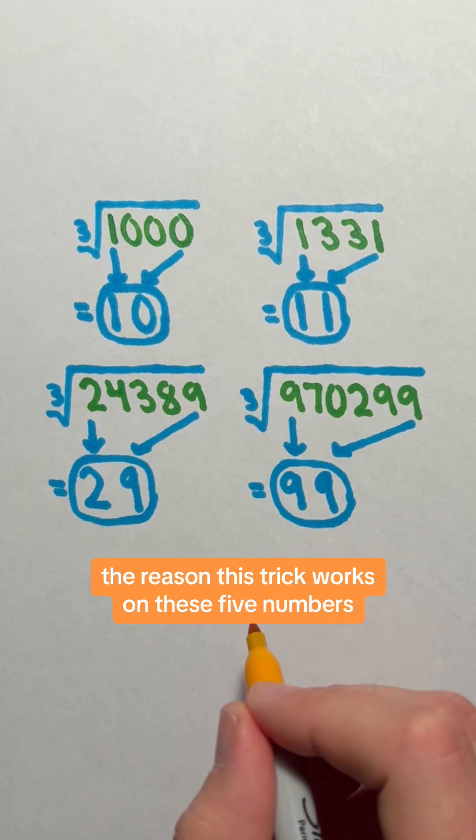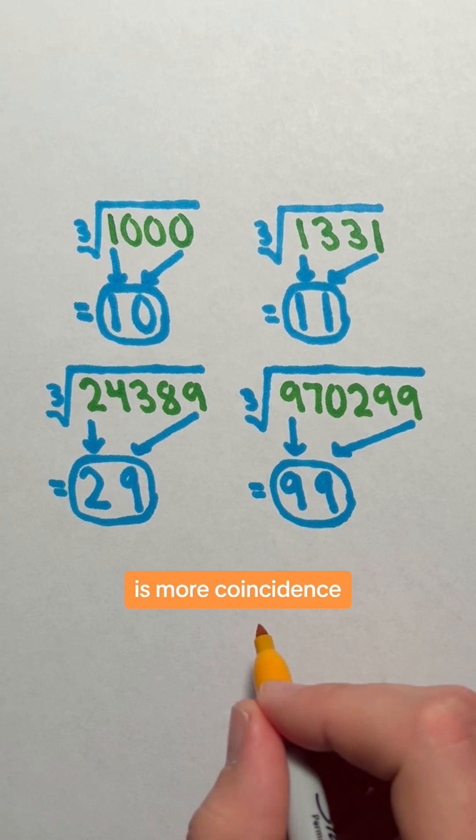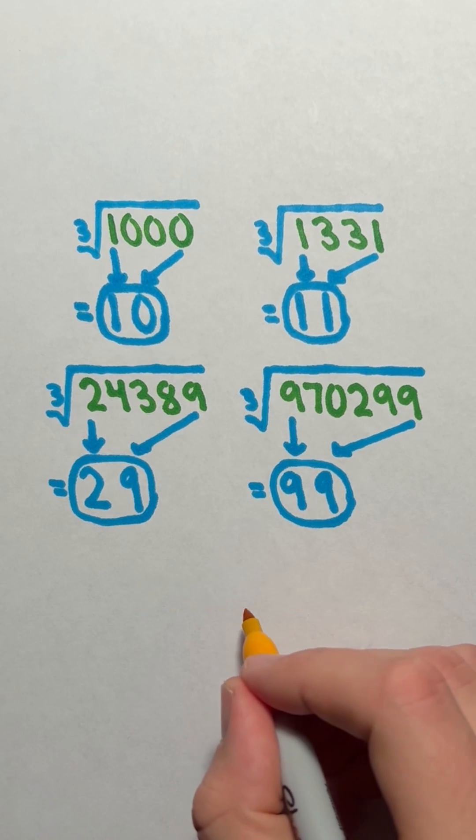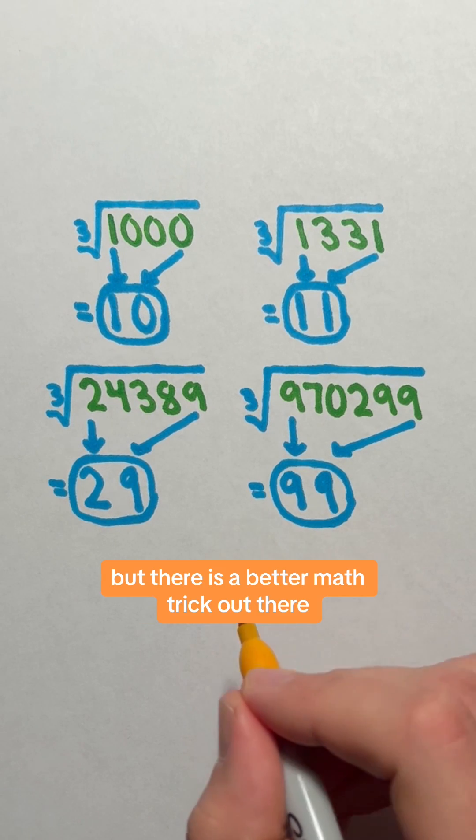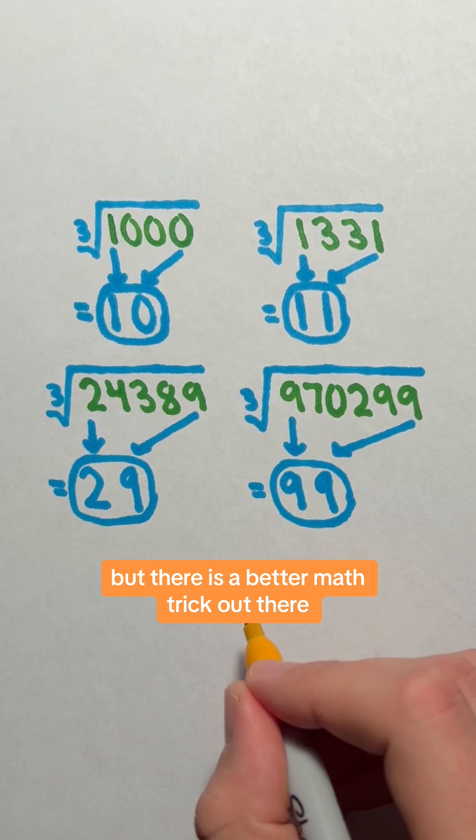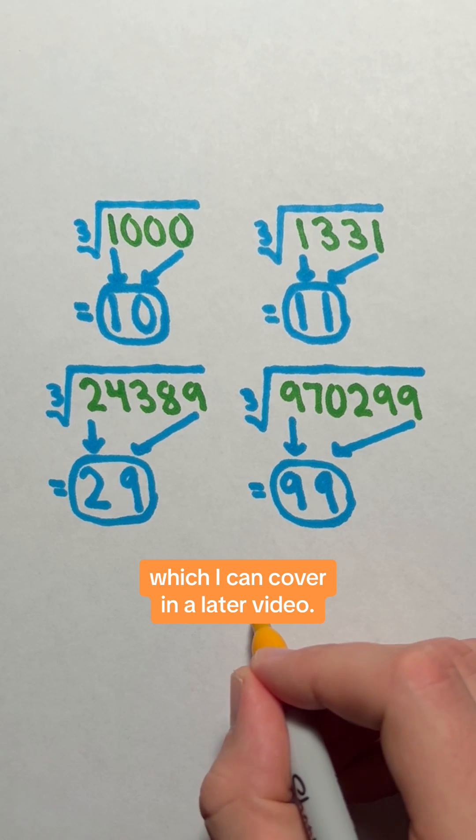In addition, the reason this trick works on these 5 numbers is more coincidence than anything else. You'd be better off just remembering what the cube roots are, but there is a better math trick out there to help you calculate cube roots which I can cover in a later video.